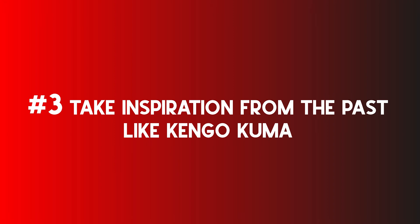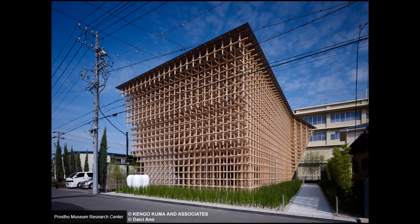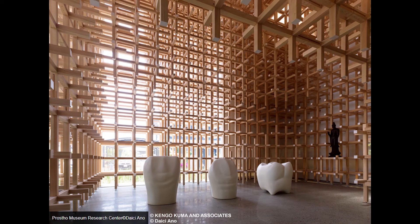Method number three, used by Kengo Kuma, is to take inspiration from the past. As architects, as human beings, we are all coming from a region, from a country, with a culture, with some vernacular architecture and architectural principles. Kengo Kuma is really influenced by his culture — the Japanese culture. Since the beginning, when he started to work, he wanted to adapt the principles of traditional Japanese architecture to nowadays. If we take as an example the Prostow Museum Research Center, we can find some principles of Japanese architecture, like this ambiguity between the interior and the exterior with a facade which is quite immaterial.